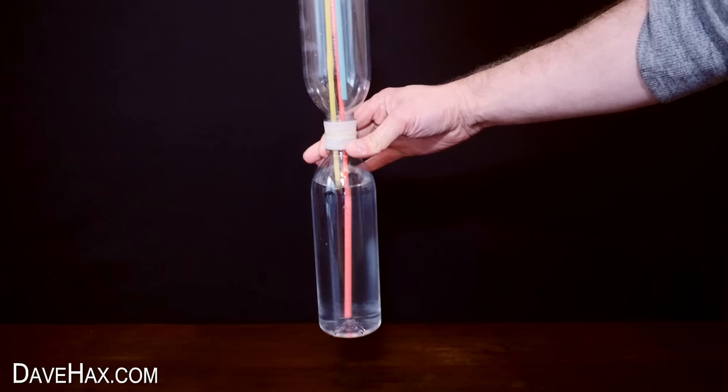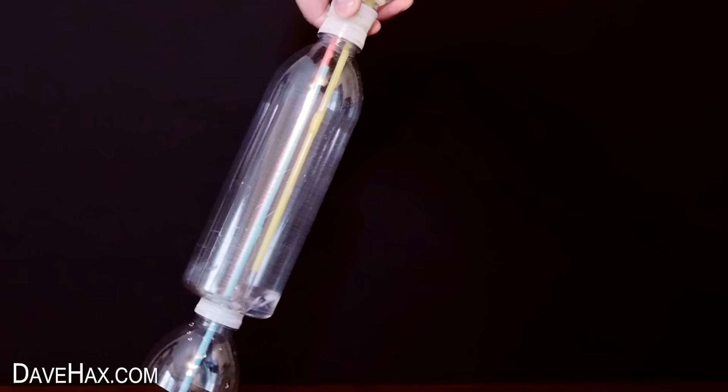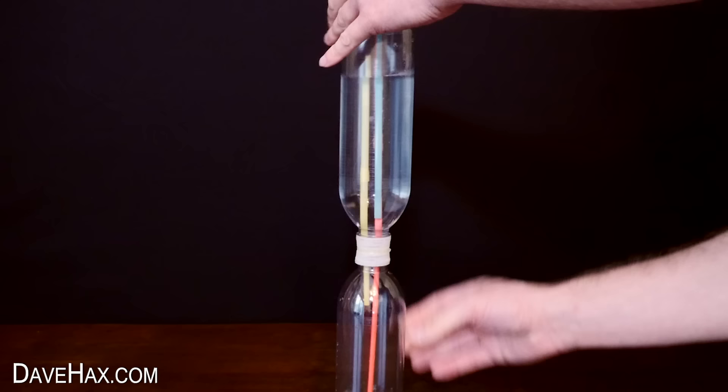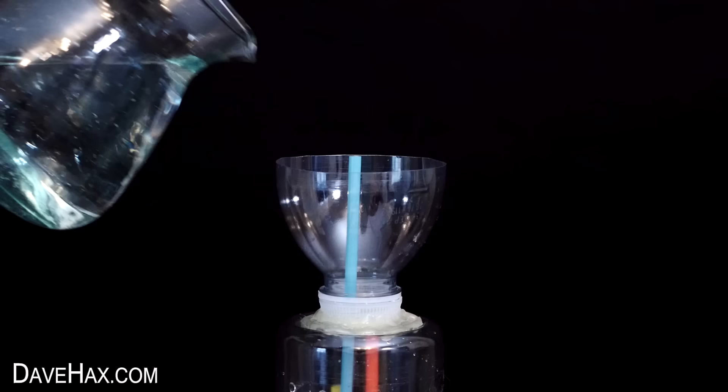Next we need to turn it upside down so the water runs through the yellow straw into the middle bottle. When that's filled up, turn it back around and stand it up. It's now primed and ready.